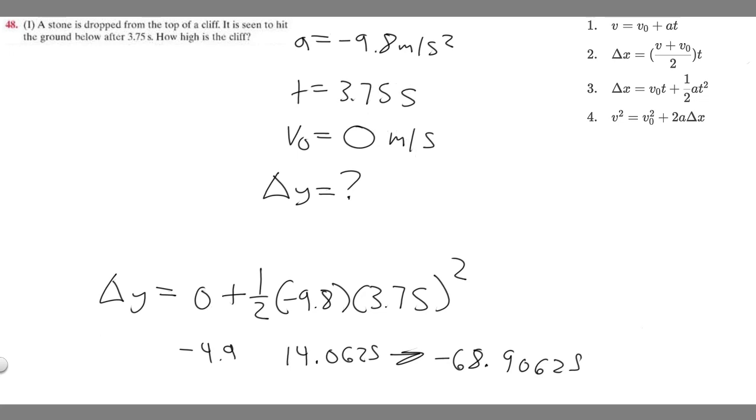Keep in mind this is change in y, so this is just going to be meters. Minus 68.9 meters or whatever. And then you can round. I'm going to round to the whole number, so if you go ahead and round this, it's going to be about minus 69 meters.